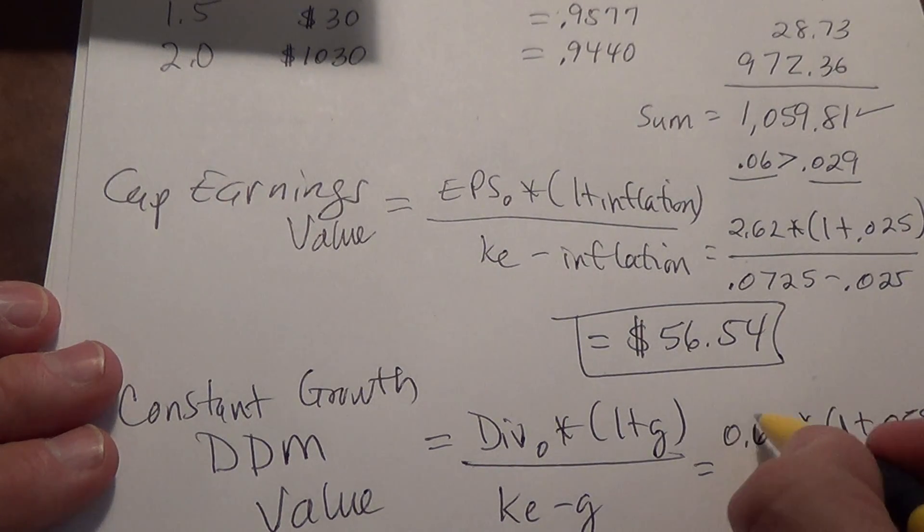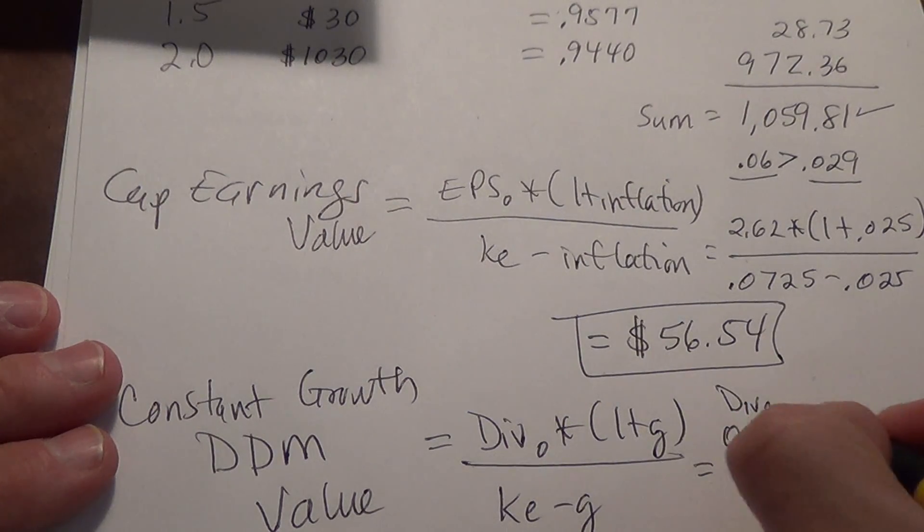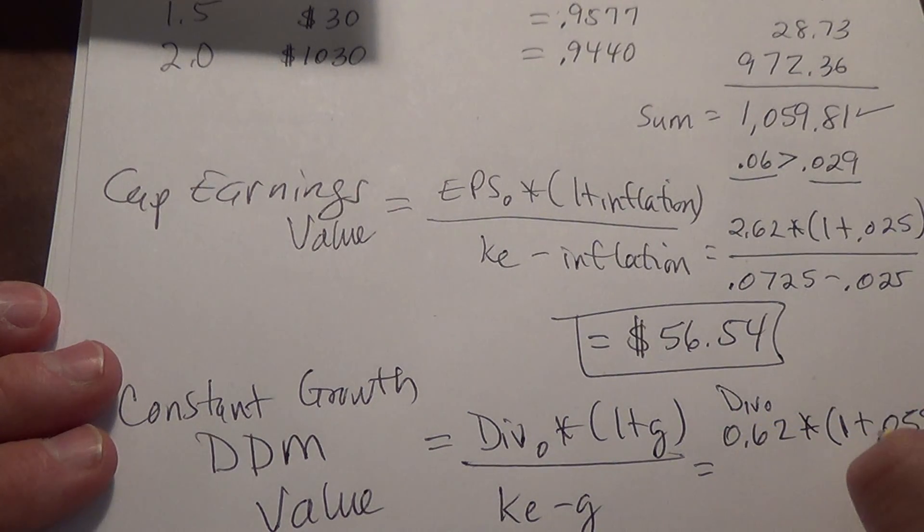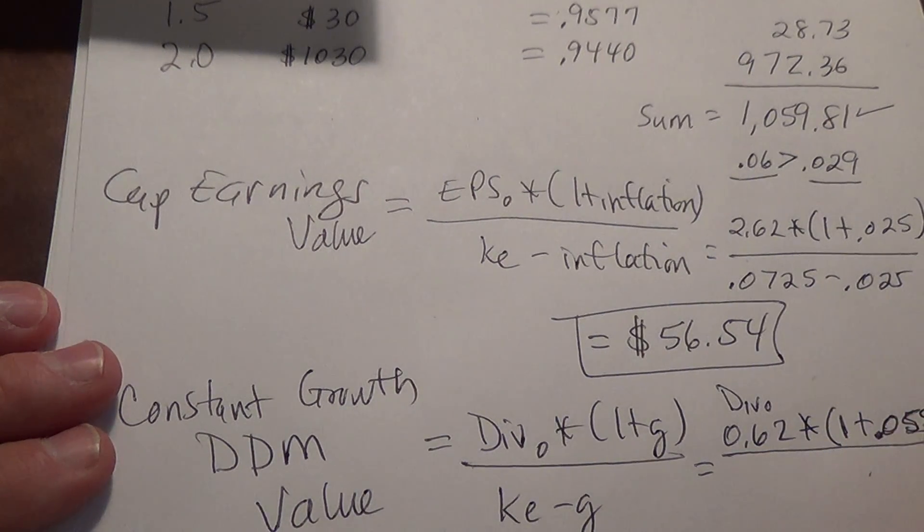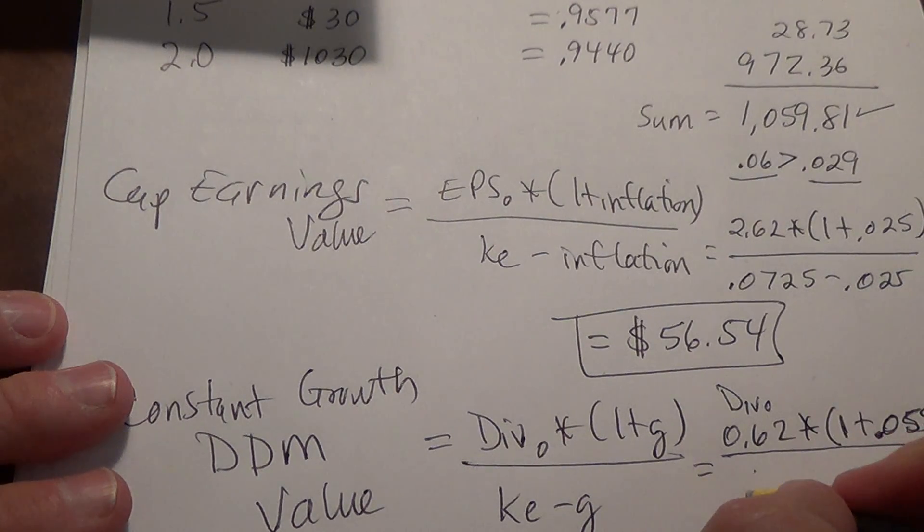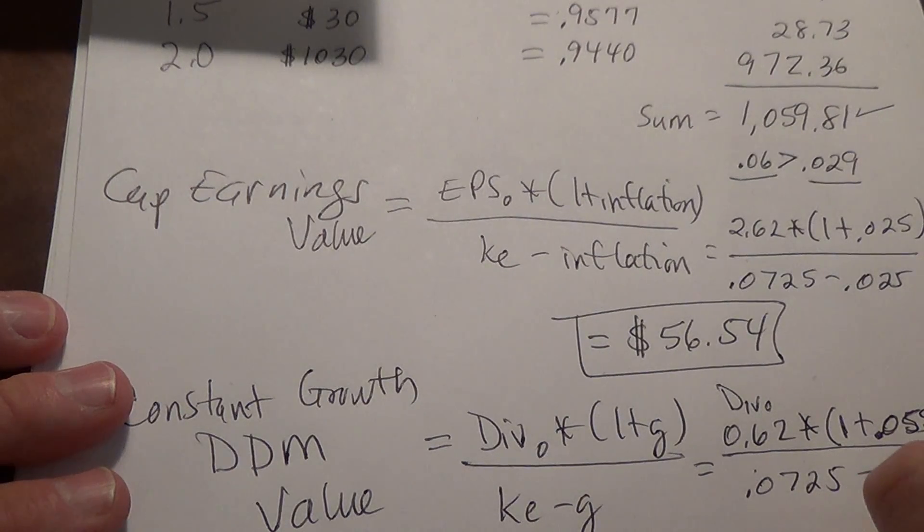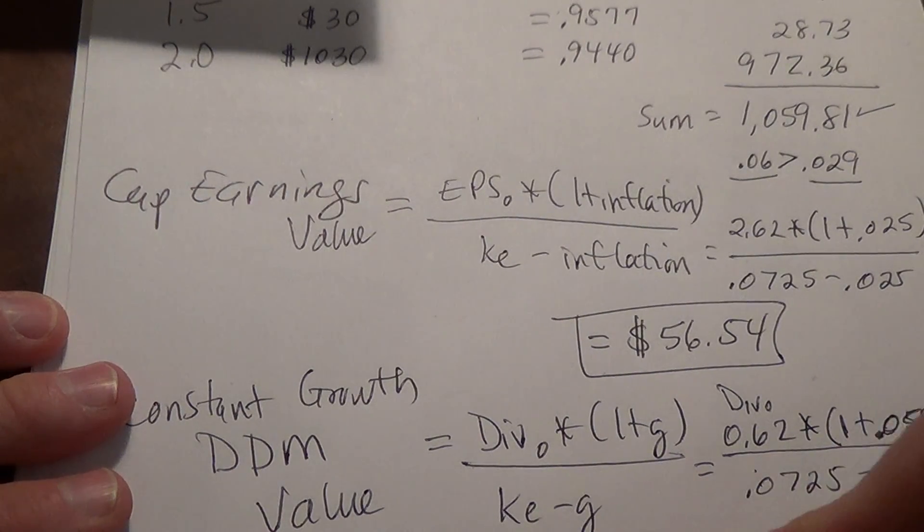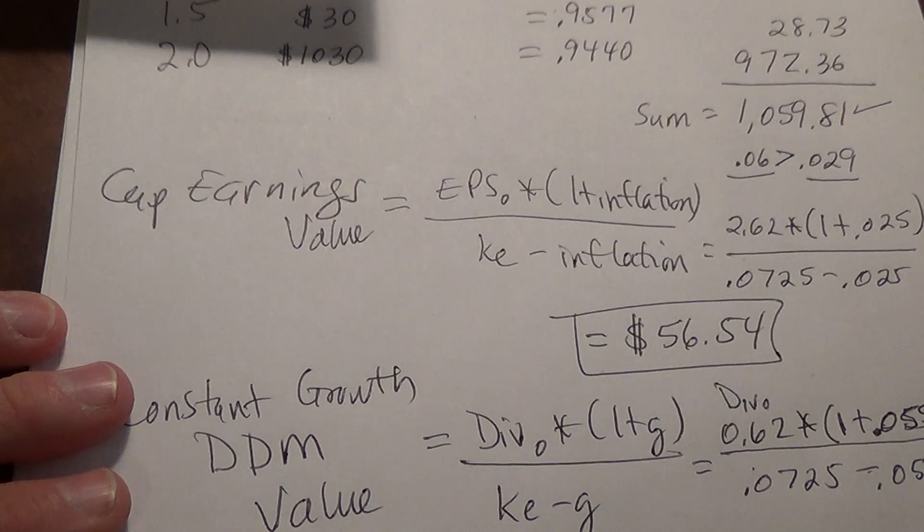What we're doing here is taking the dividend that they paid last year and we're conflating it so it will be dividends starting before we buy the stock next year's dividend. So multiply 62 cents times 1 plus the growth rate and divide by the discount rate 0.0725 minus 0.055. And in this case, we get a price for this stock of $37.38.